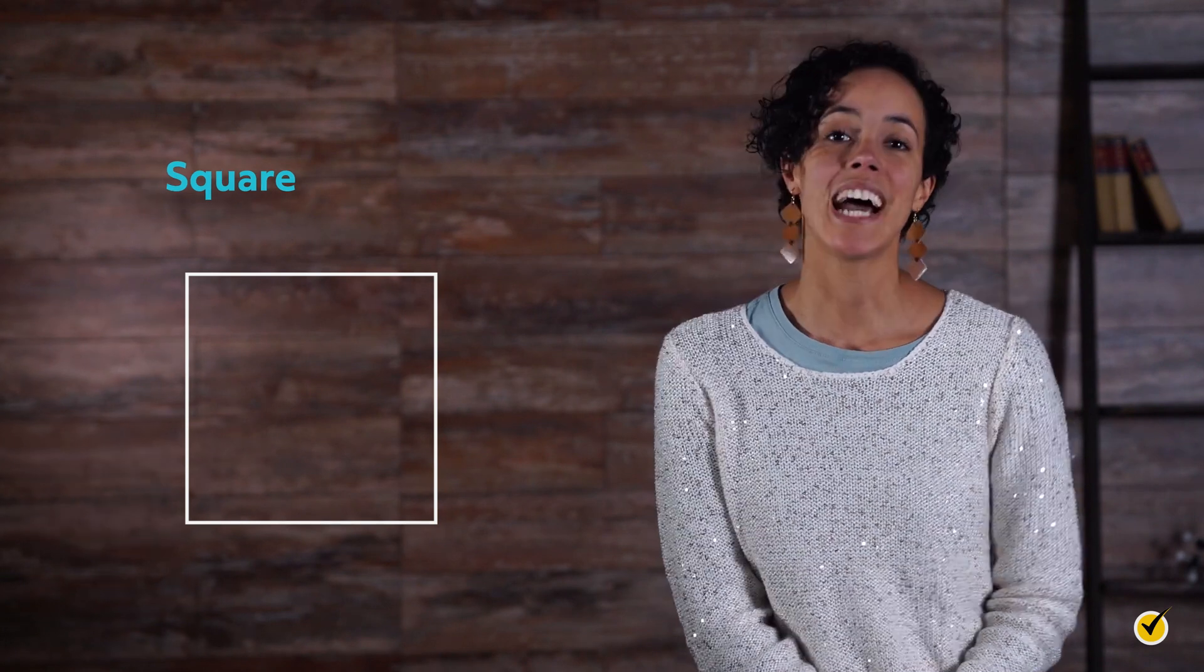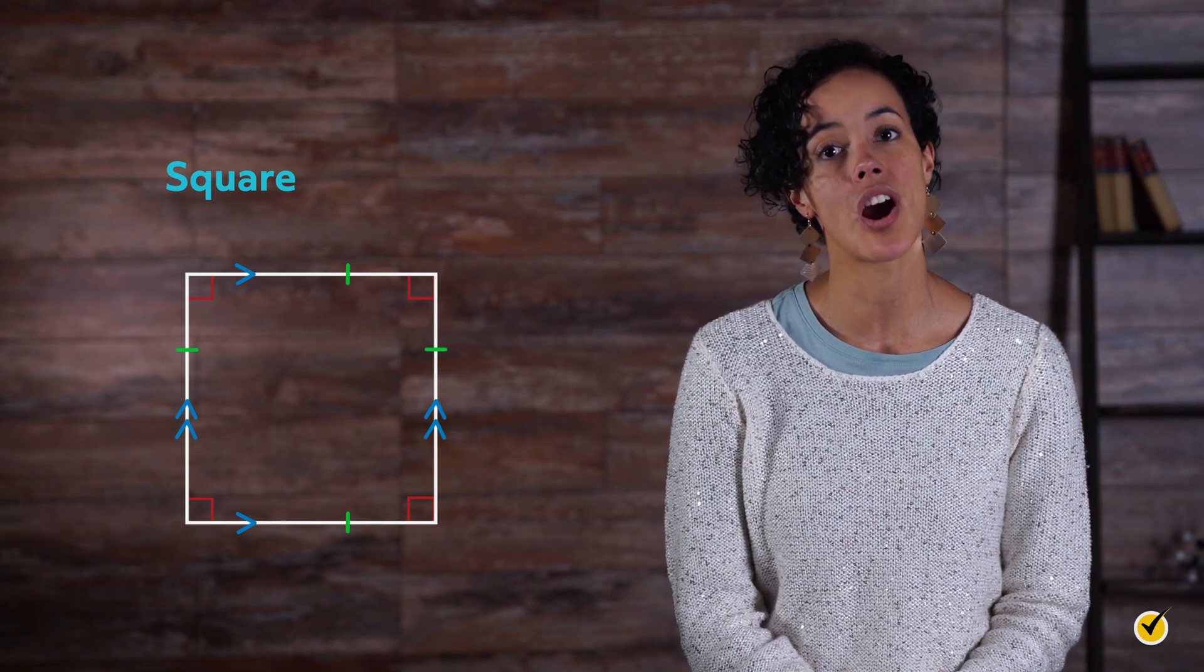Our last special parallelogram is a rectangle and a rhombus at the same time, so it has the right angles of the rectangle and the congruent sides of the rhombus. It's another shape we all know well, the square. As you can see, the opposite sides are parallel. All the angles are right angles and all the sides are congruent.